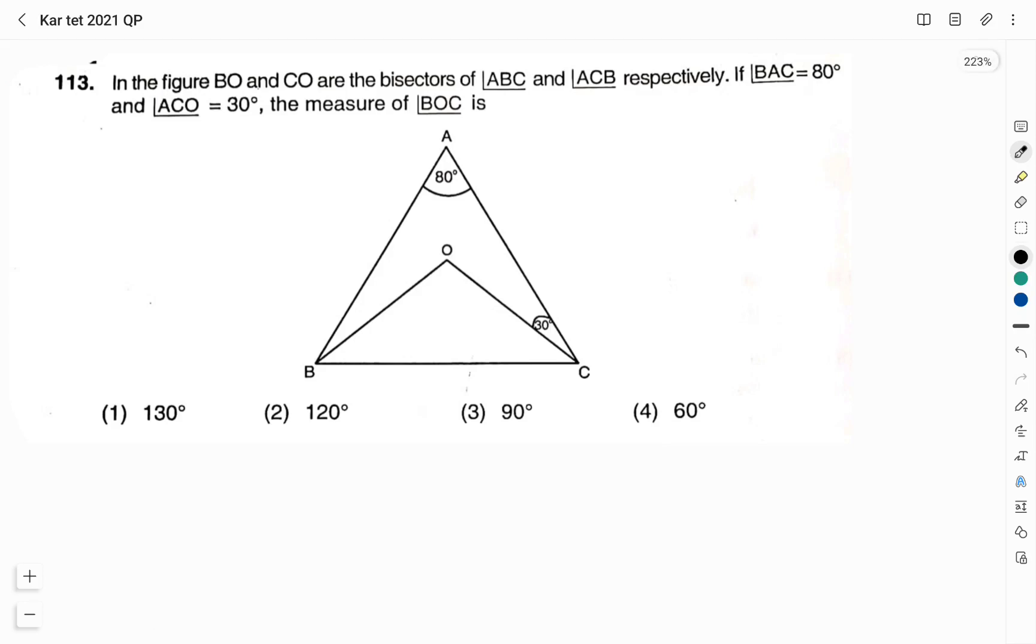Question number 113. In the given figure, BO and CO are the bisectors of angle ABC and angle ACB respectively. If angle BAC is 80 degree and angle ACO is 30 degree then the measure of angle BOC is option 1: 130 degree, option 2: 120 degree, option 3: 90 degree, option 4: 60 degree. We are asked to find the measure of angle BOC. We need to find this angle. Let me denote this as x.